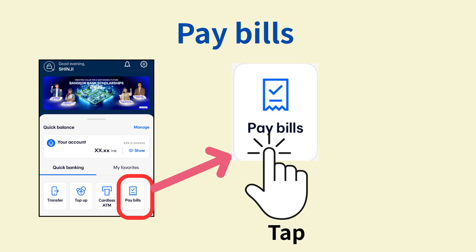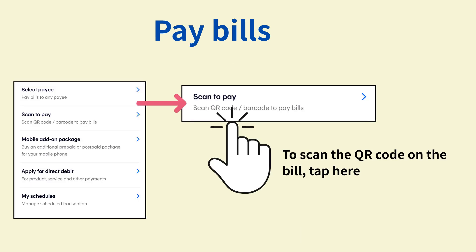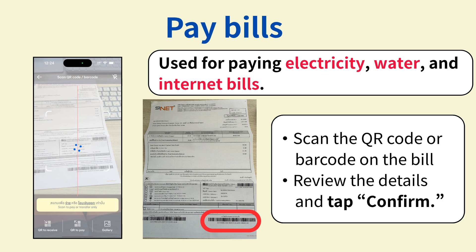To pay a bill, tap Pay Bills on the top screen. This is the icon to look for. To pay by scanning the QR code on the bill, tap Scan to Pay. Scan the QR code or barcode on bills such as electricity, water, or internet charges. Check the scanned information, and if everything is correct, tap Confirm.